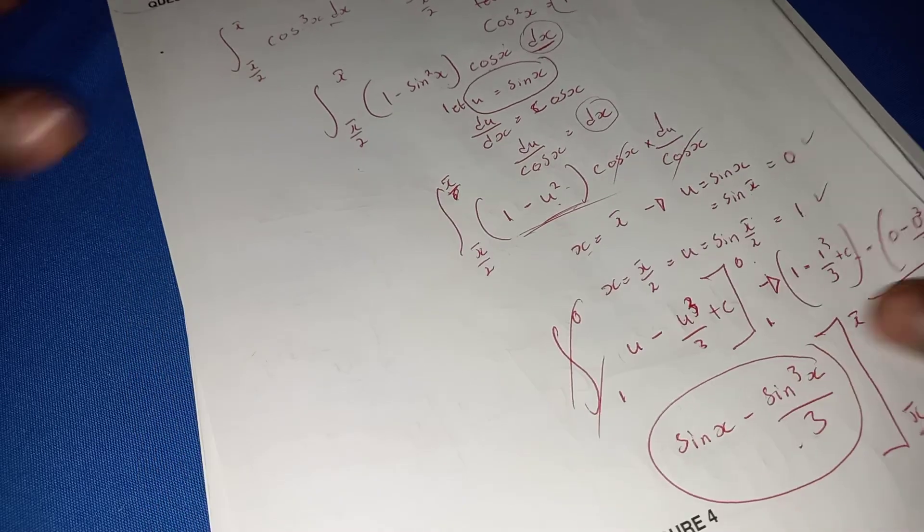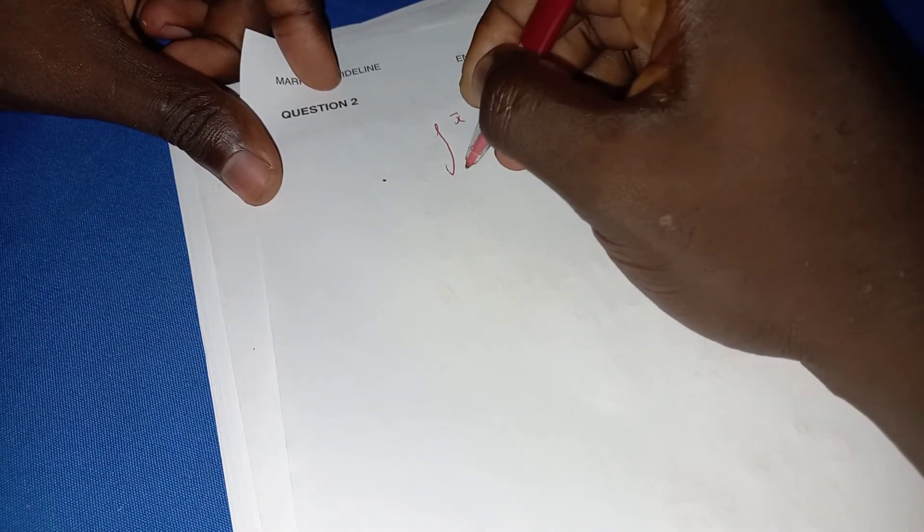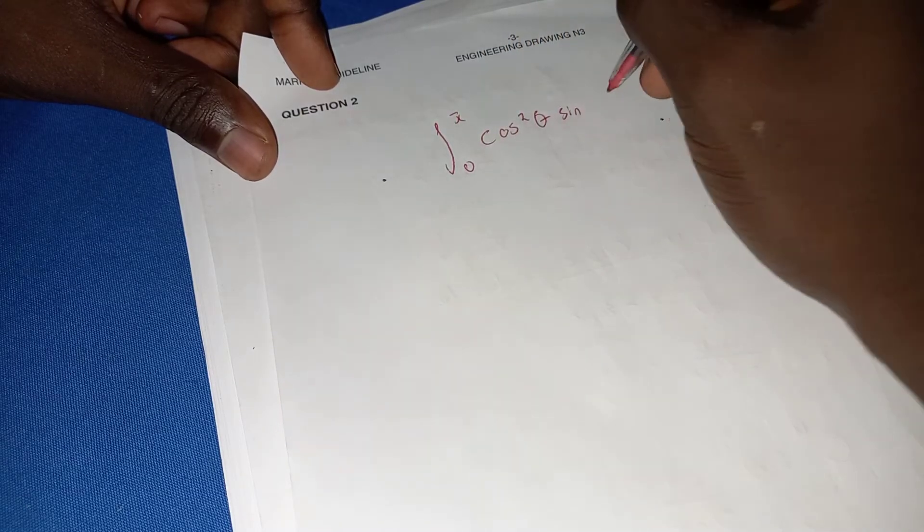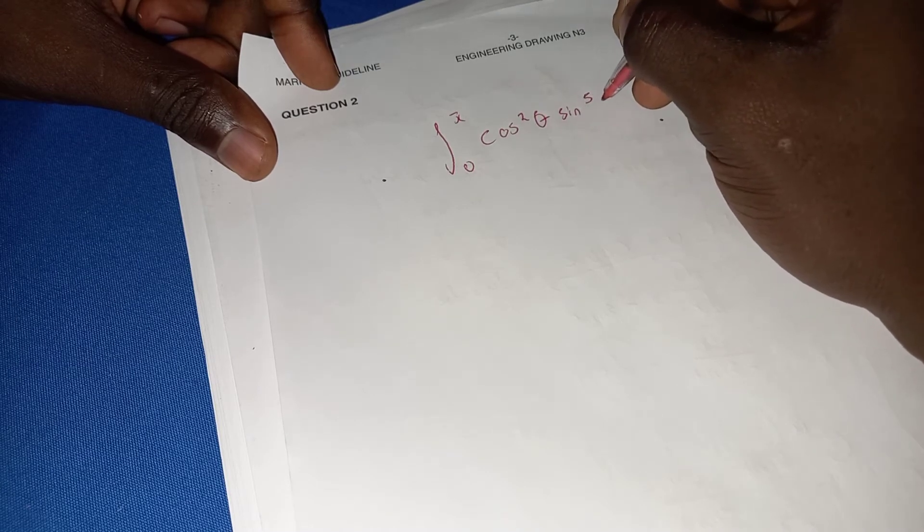Let's do another quick example with trigonometric ratios. We have the integral from 0 to pi of cos²θ · sin⁵θ dθ. As always, we concentrate on the powers. Both terms have powers, so we focus on the one with the highest power, which is sin⁵.